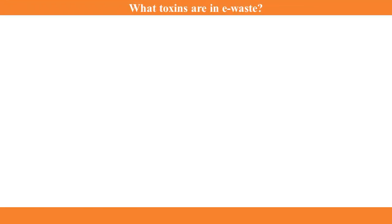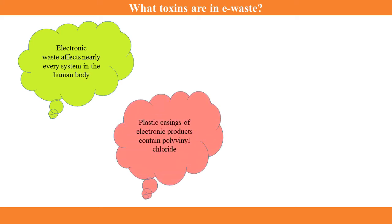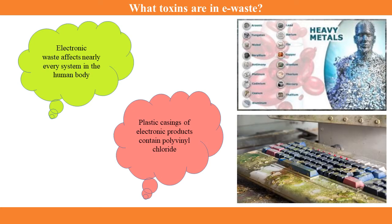Do you know what toxins are in e-waste? Electronic waste affects nearly every system in the human body because the materials that make up e-waste contain a plethora of toxic components, including mercury, lead, cadmium, polybrominated flame retardant, barium, and lithium. Even the plastic casings of electronic products contain polyvinyl chloride.